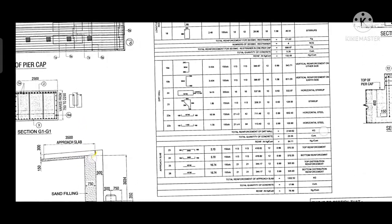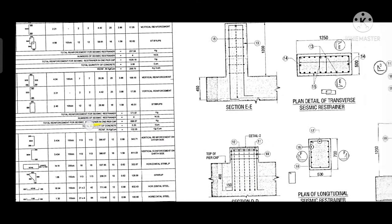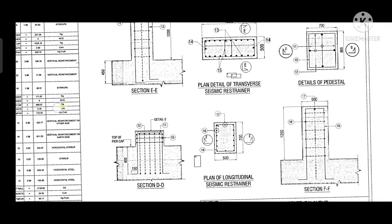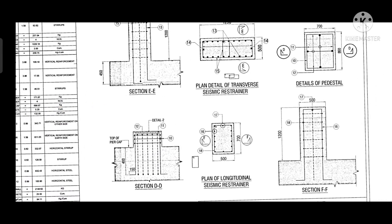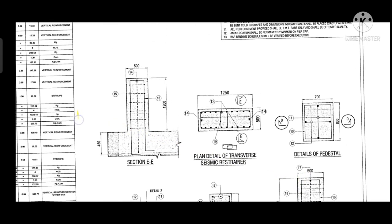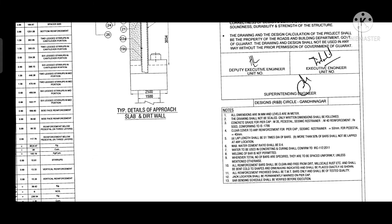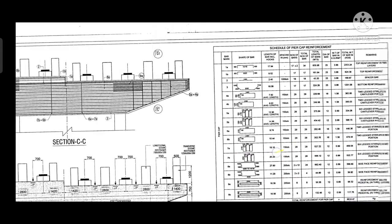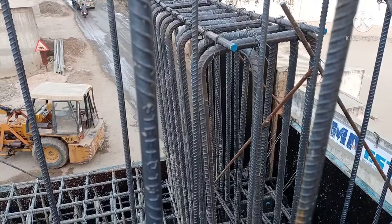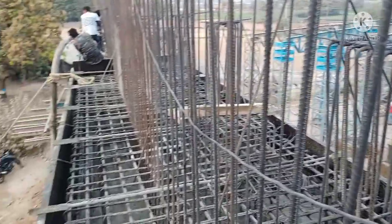When we need to give the elevation of the bridge at the curve portion, we have to change the pedestal size, which is given in the drawing. Every pedestal size is given as per the required elevation of the bridge. This is the pier cap on the curve.